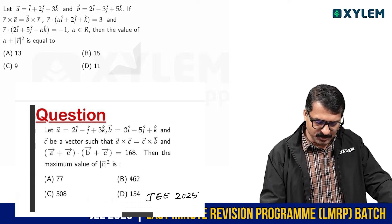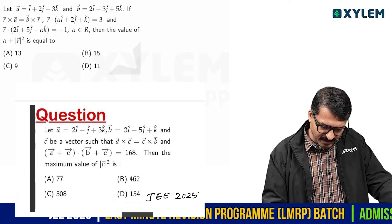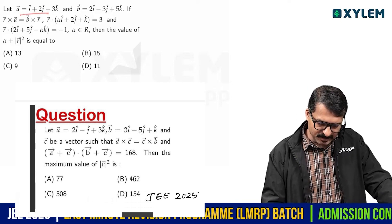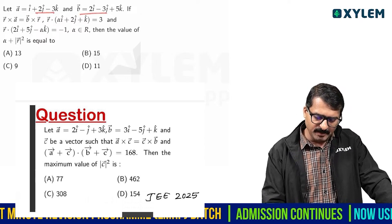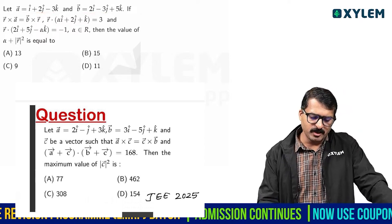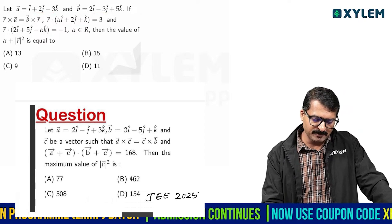i equals i plus 2j minus 3k, and b equals 2i minus 3j plus 5k.